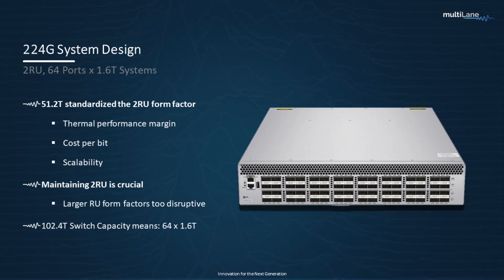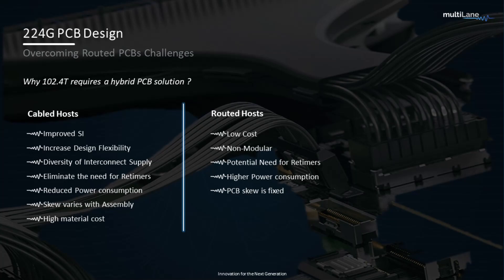102.4T has already been set, but it will need some design tweaks — specifically, adapting a hybrid PCB solution. PCB skew is fixed, whereas cable host skew varies with assembly, with bends and twists. But hybrid hosts offer lower insertion loss, which means better performance and signal-to-noise ratio. Per some recent IEEE contributions, we can see as much as 4 dB insertion loss improvement at 55 gigahertz when using a cable routing approach versus a PCB routing approach.